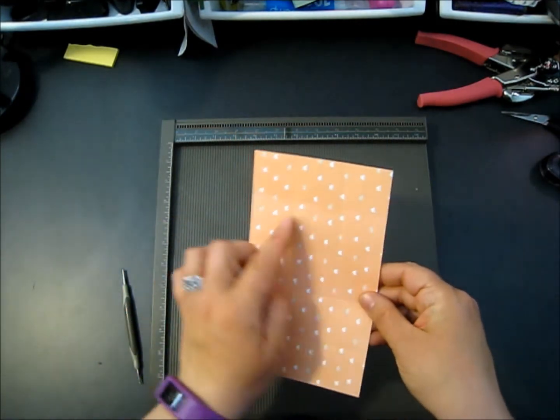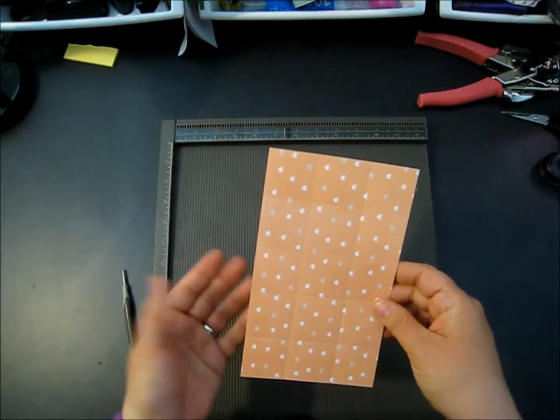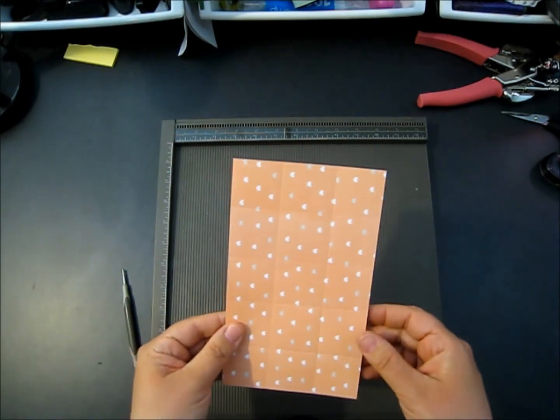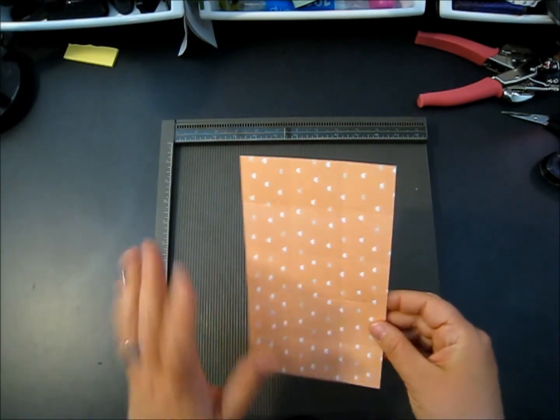Once you've got that done, it's all squares, they're all even, hence the name mini square mini pinch top box.